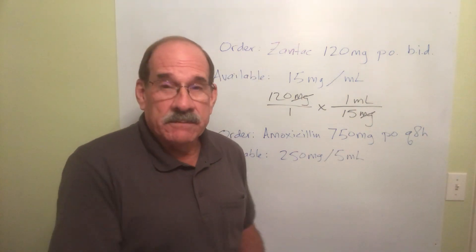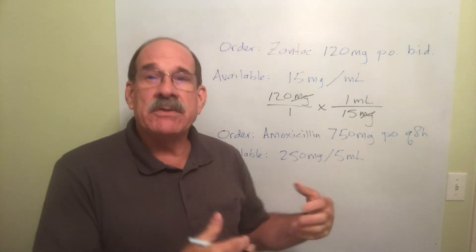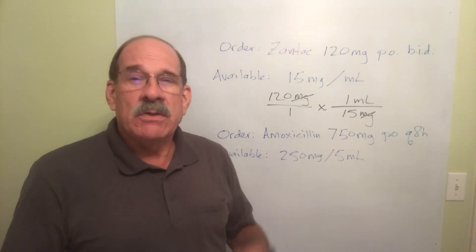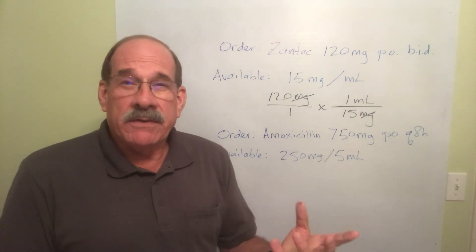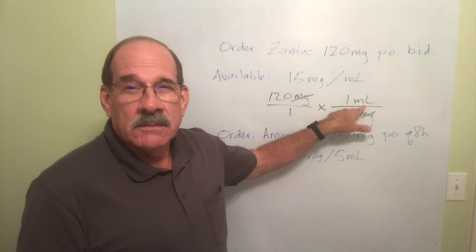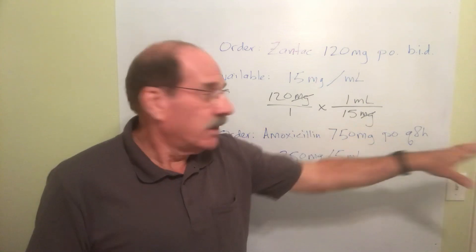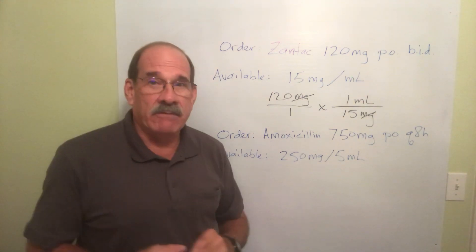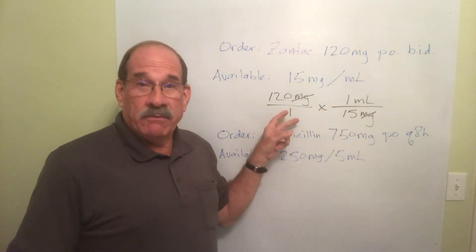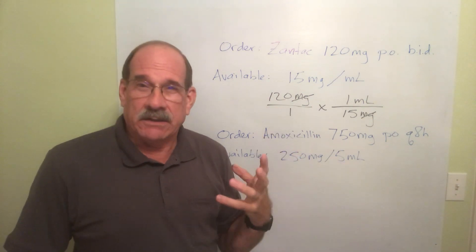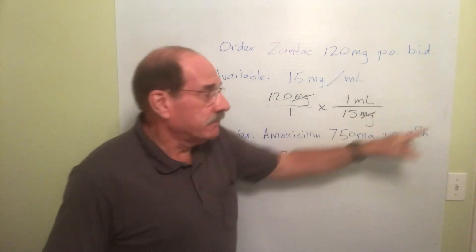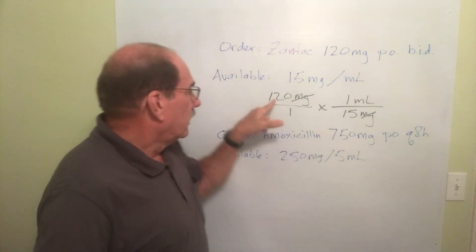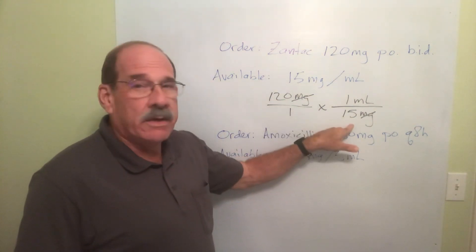The farther we go with this, it becomes increasingly important that you physically — with your pencil or pen — cancel those out so you can see they're gone. What's the only thing left? Milliliters. So my answer will be in milliliters. Milligrams disappeared; they're gone. Technically I'm multiplying two fractions, multiplying the top numbers and the bottom numbers. There are two non-one numbers: one up top and one on the bottom.